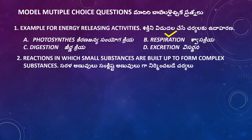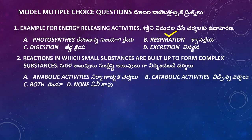Question: Reactions in which small substances are built up to form complex substances are called — Options: Anabolic activities, Catabolic activities, Both, None. The right answer is Anabolic activities, as these are constructive reactions building complex substances from simpler ones.